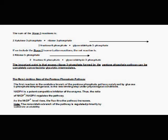The sum of the stage 2 reactions is: 2 xylulose-5-phosphate plus ribose-5-phosphate is converted into 2 fructose-6-phosphate plus glyceraldehyde-3-phosphate. If we include the stage 1 isomerase reactions, the net reaction is: 3 ribose-5-phosphate is converted into 2 fructose-6-phosphate plus 3 glyceraldehyde-3-phosphate. The important point is that excess ribose-5-phosphate formed by the pentose phosphate pathway can be completely converted into glycolytic intermediates.